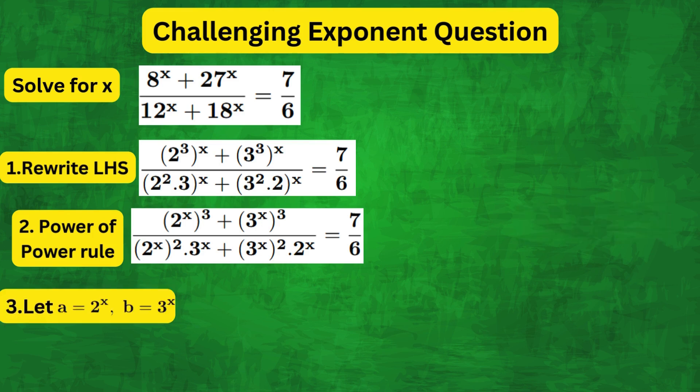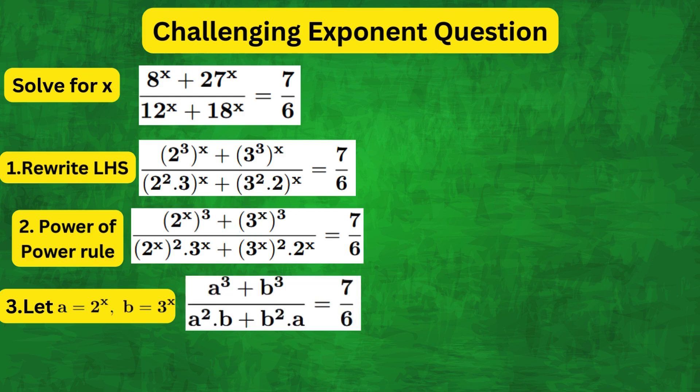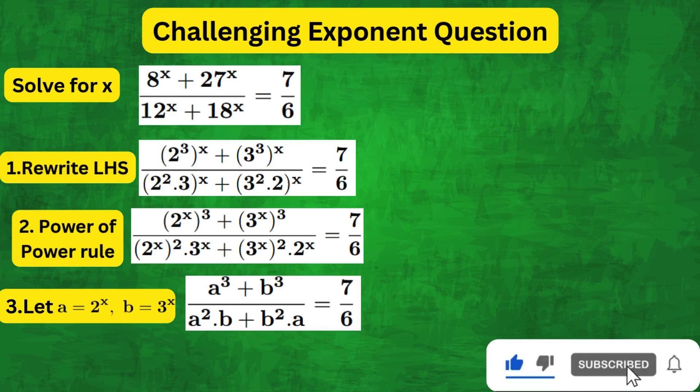Now suppose that a equals 2 to the x and b equals 3 to the x. So we can rewrite the left hand side in terms of a and b. We've got a cubed plus b cubed over a squared times b plus b squared times a.